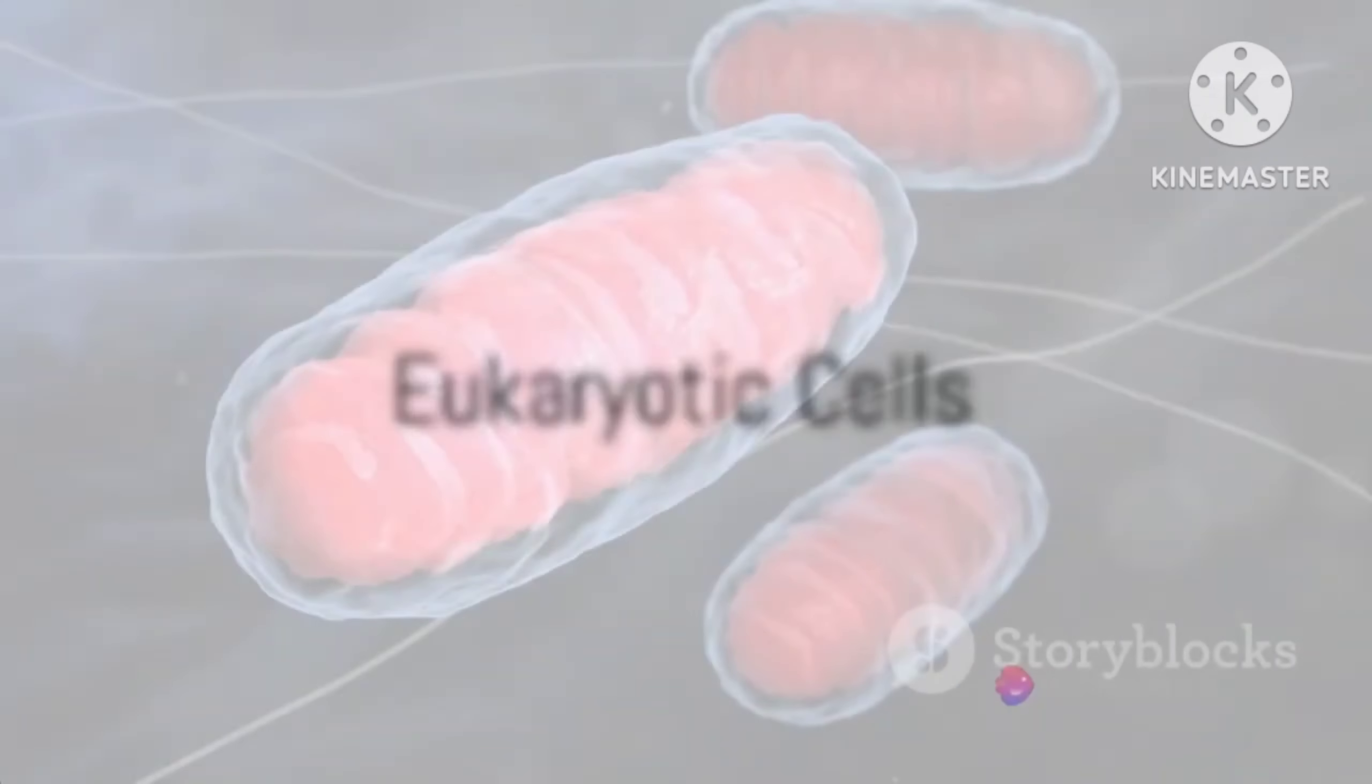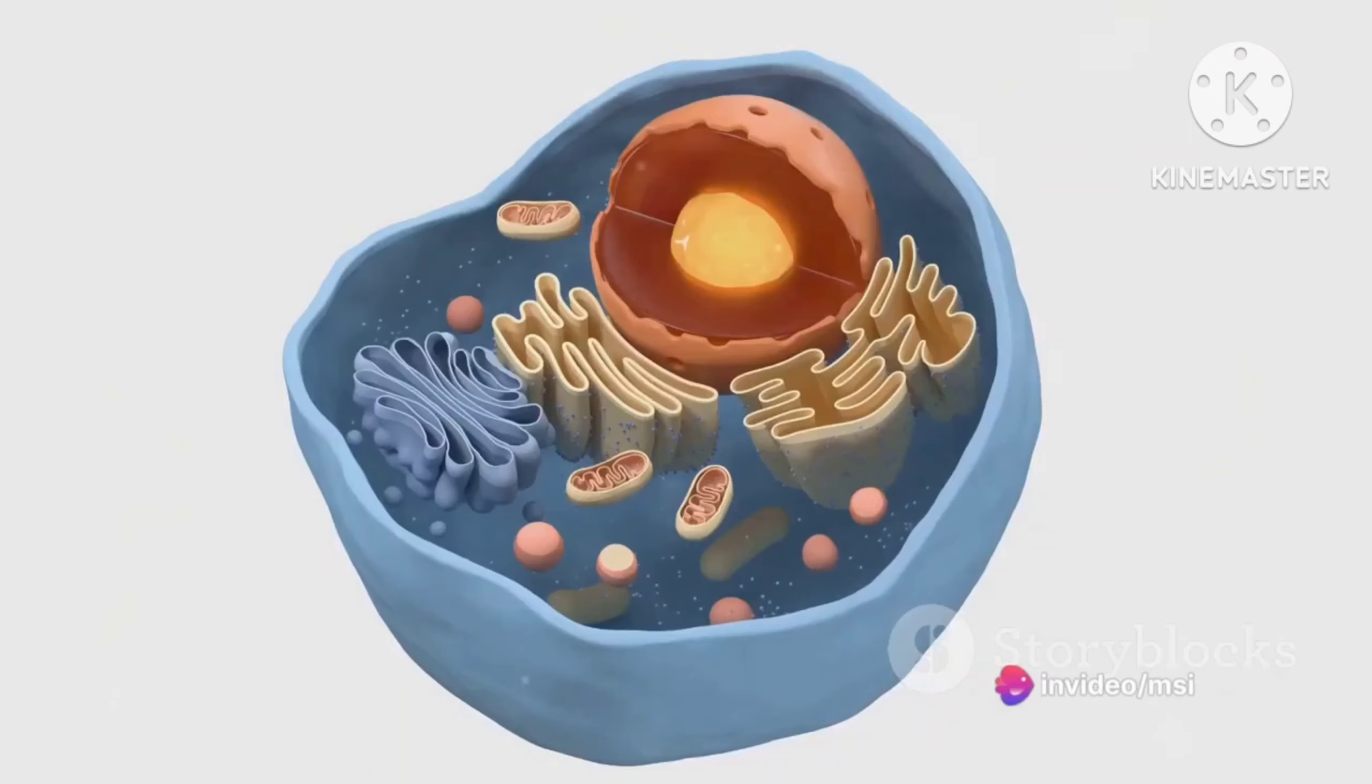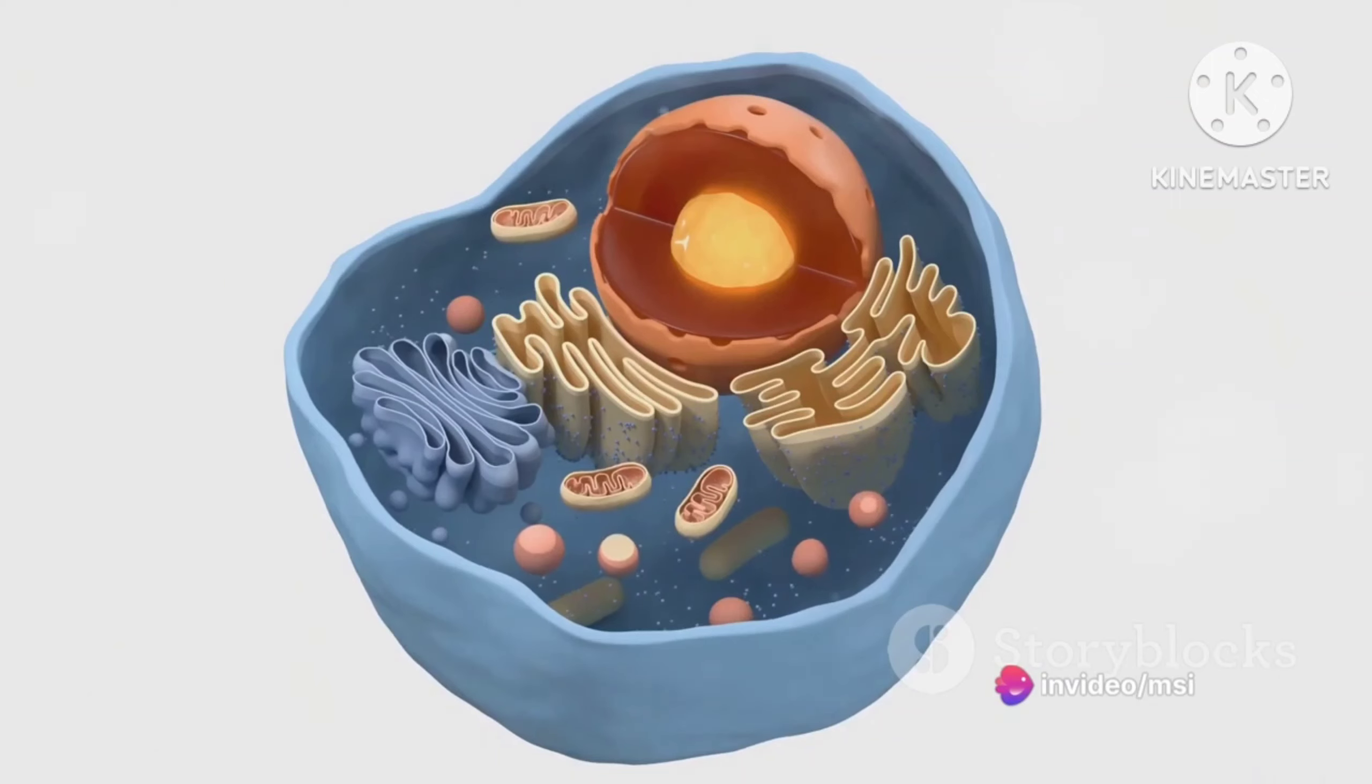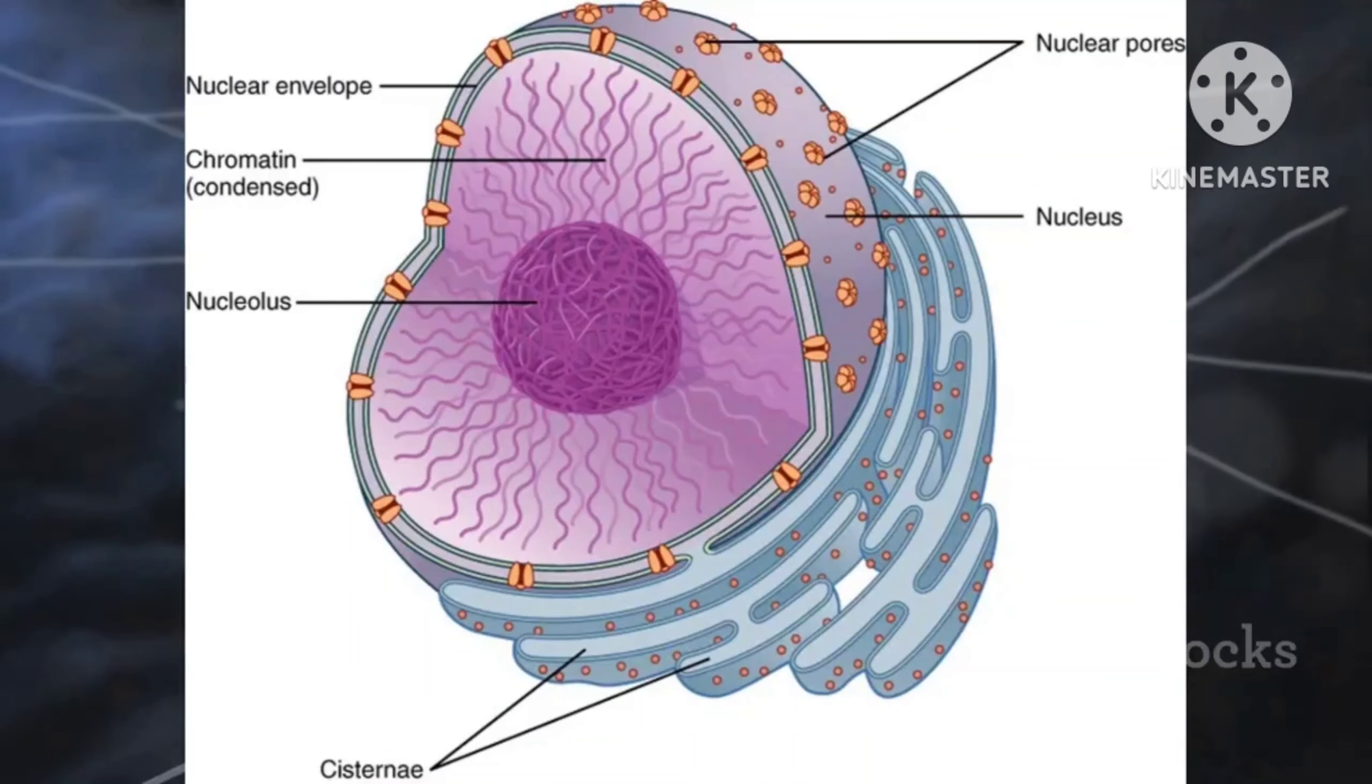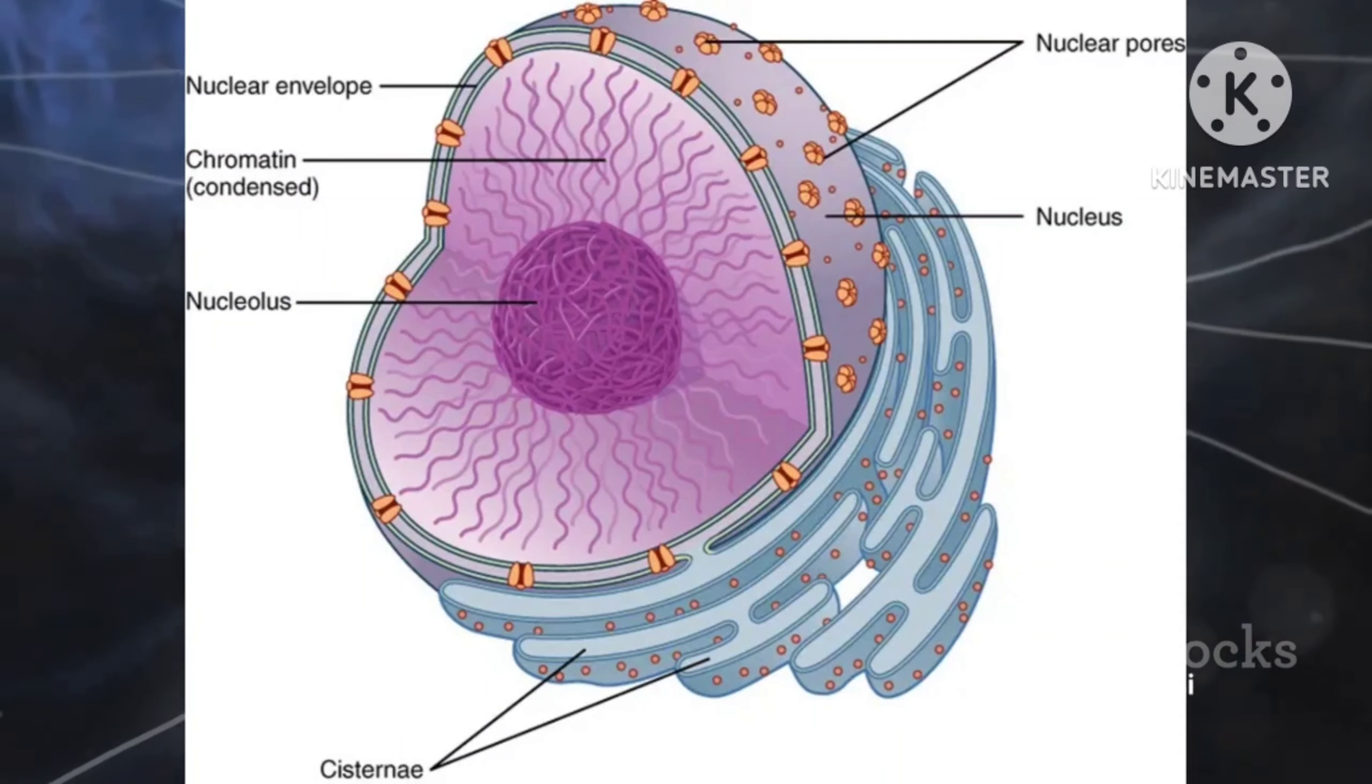Now, envision a luxurious penthouse suite, spacious and organized. This mirrors a eukaryotic cell, larger and more complex, offering a more organized living space. The defining feature here is a membrane-bound nucleus, a walled city, if you will, that protects the genetic material from the hustle and bustle of the cell's activities.